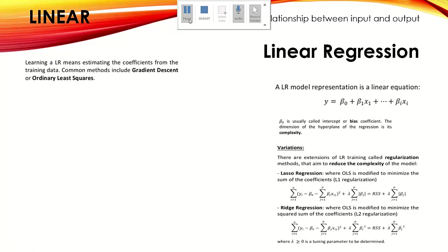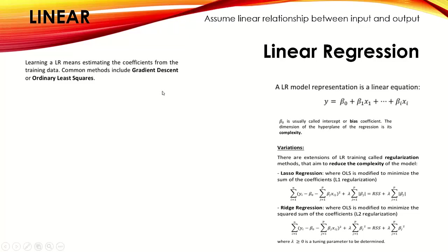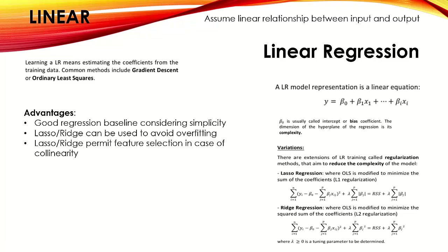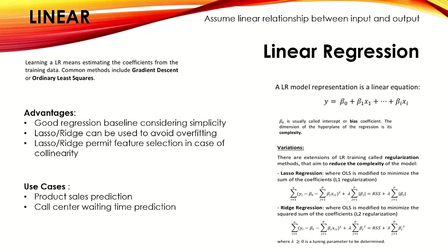Variations of linear regression include Lasso regression (L1 regularization) and Ridge regression (L2 regularization), used to reduce model complexity. L1 minimizes the coefficient values, while L2 minimizes the squared sum of coefficients. Advantages of linear regression include simplicity, and L1/L2 can be used to avoid overfitting and for feature selection when there is collinearity. Use cases include predicting real-value outputs like sales or call center wait times.